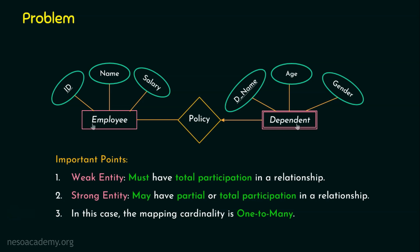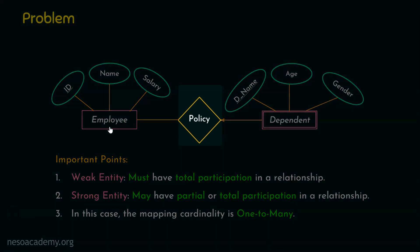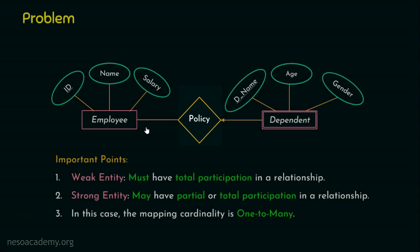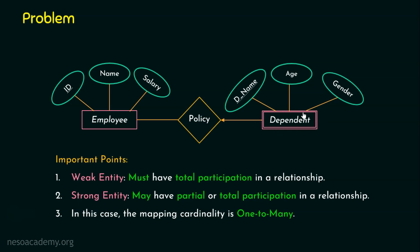In this example, the weak entity set is 'dependent.' Let's say employee one has two dependents and employee two has three dependents. The two dependents of employee one will obviously map to employee one, and the three dependents of employee two map to employee two. Whatever values exist in the dependent entity set, all must participate totally in the employee entity set via the policy relationship. So, whatever the weak entity set contains, it must have total participation in the relationship — in this case, dependent must have total participation with employee.